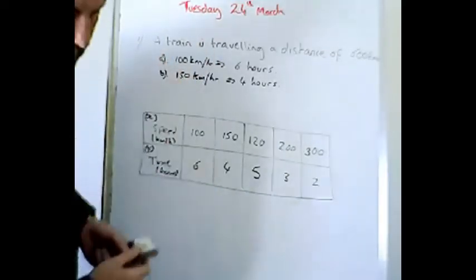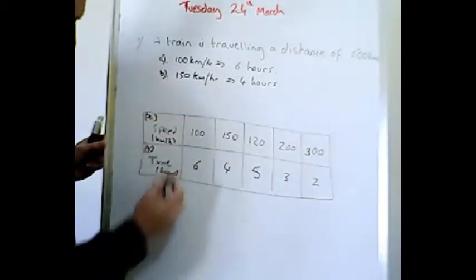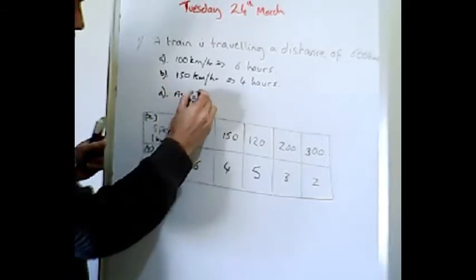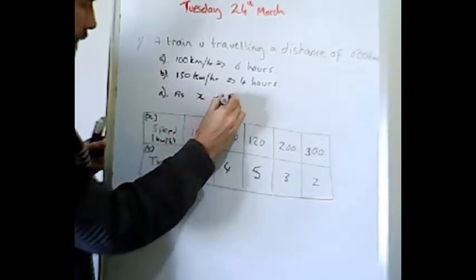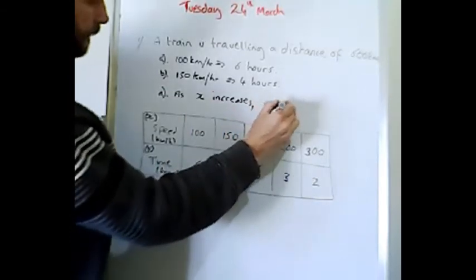So I'll say here, this is C, you've got D, as x increases, y decreases. So therefore it's inversely proportional.